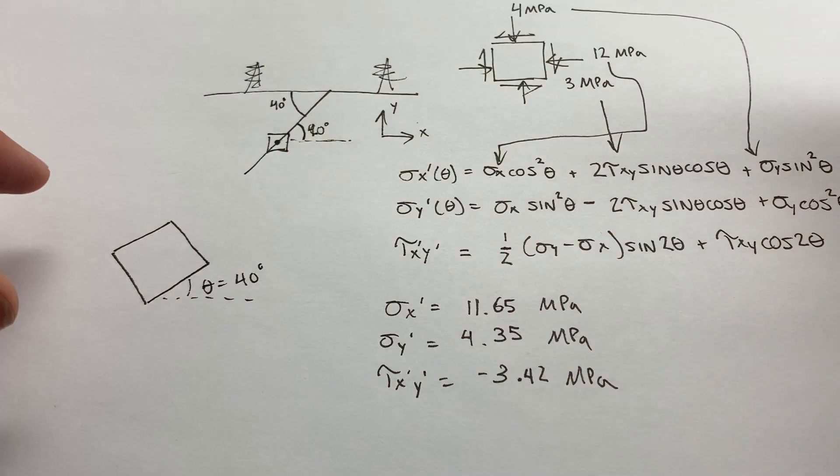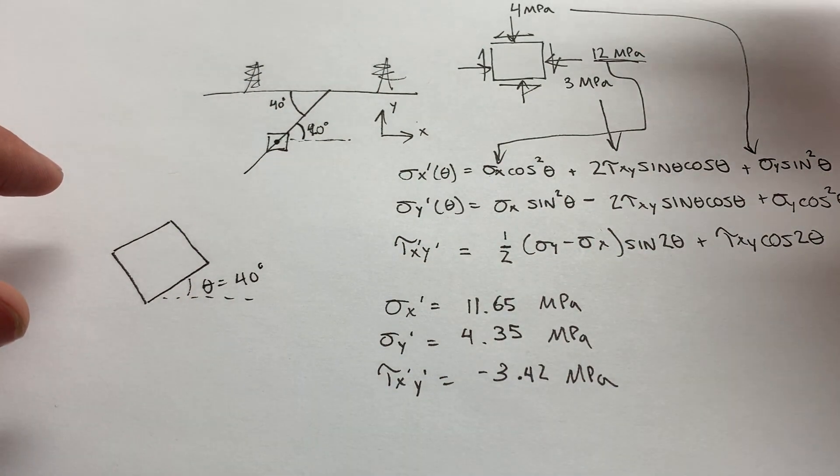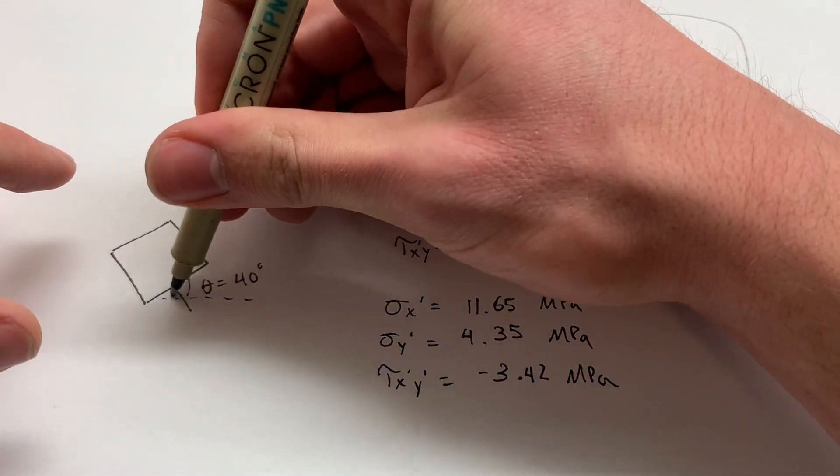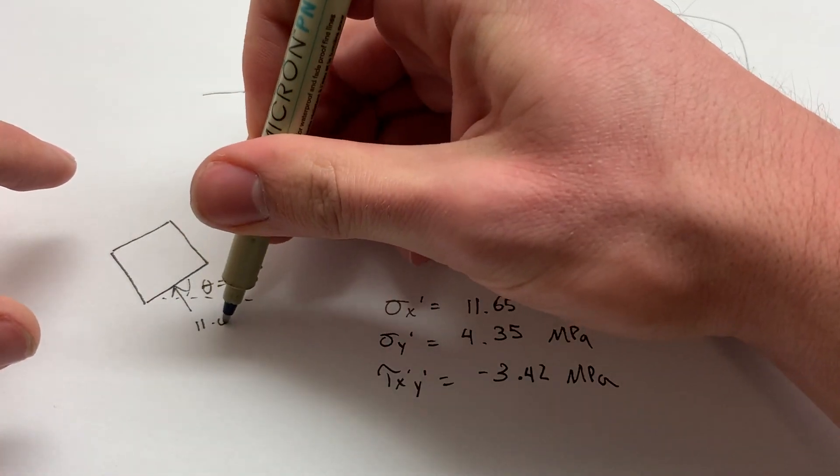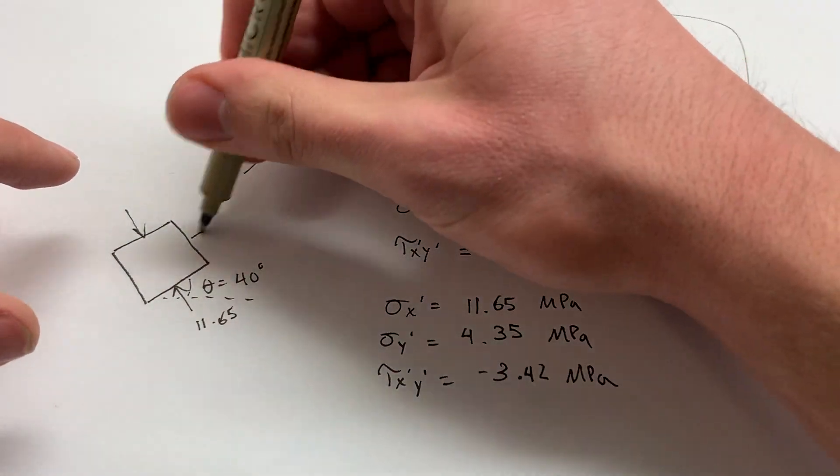So it was originally vertical. So this one is now... That was our original sigma x's are going to go here, right? So it's going to be the new one, 11.65. That's going to correspond with 1 there. About the y.